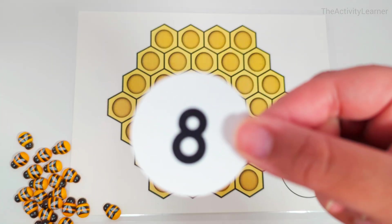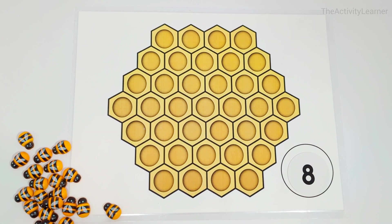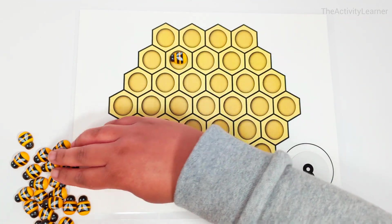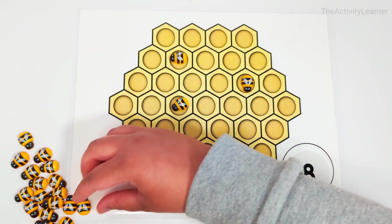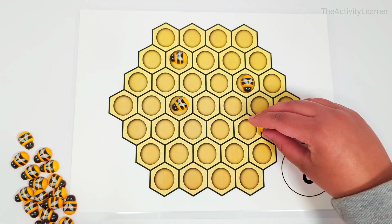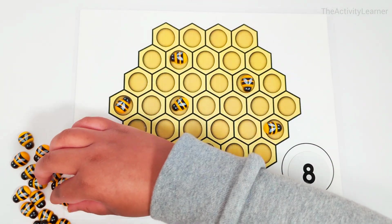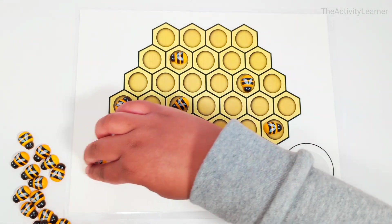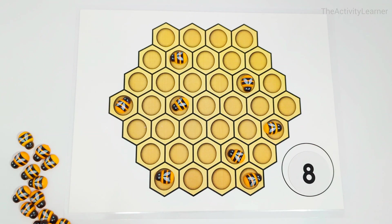Number eight. One, two, three, four, five, six, seven, eight. Eight bees.